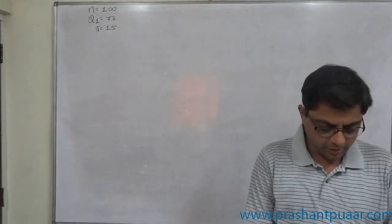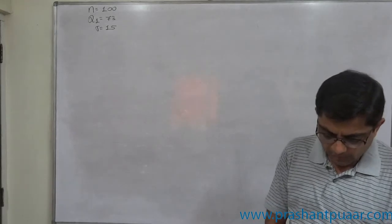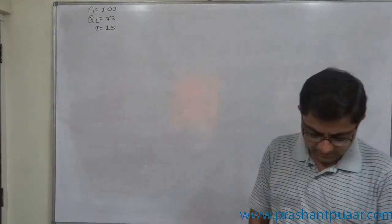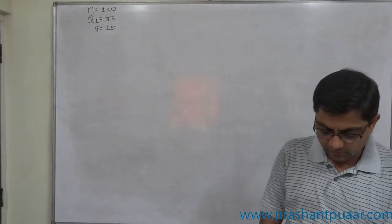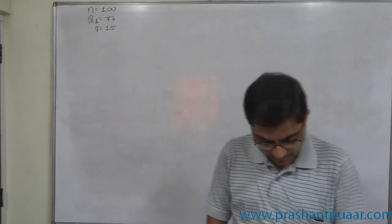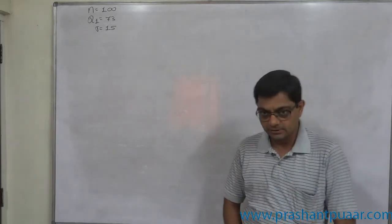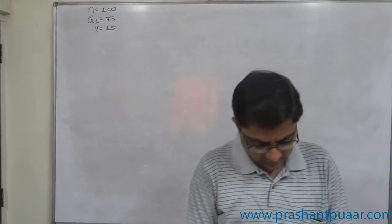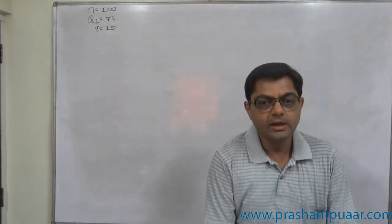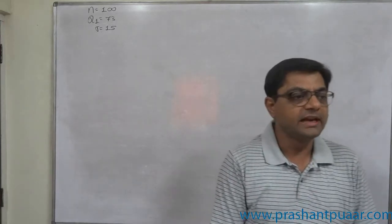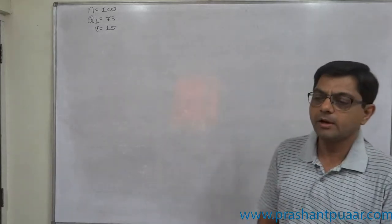For a normal distribution of 100 items, Q1 is 73 and standard deviation is 15. Find: number one, the median, and number two, the limits for the central 50 percent of the items. Finding the limits for central 50 percent means we require to find out the interquartile range, Q3 minus Q1, and for that purpose we require to find Q3.